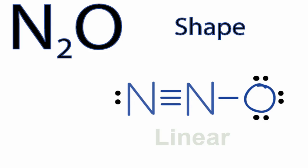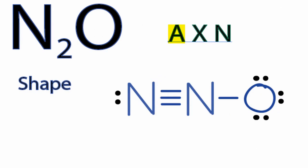We can also use the AXN notation, where A is the central nitrogen. X, that's the number of things attached to it. We have this nitrogen here and the oxygen over here, so 2.